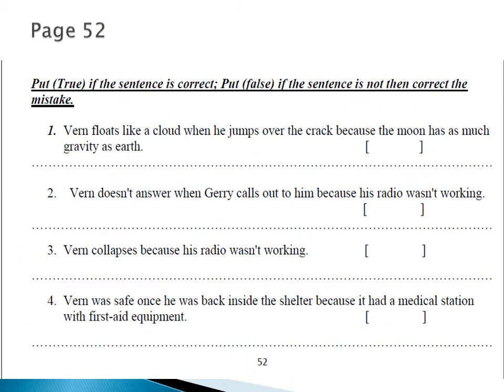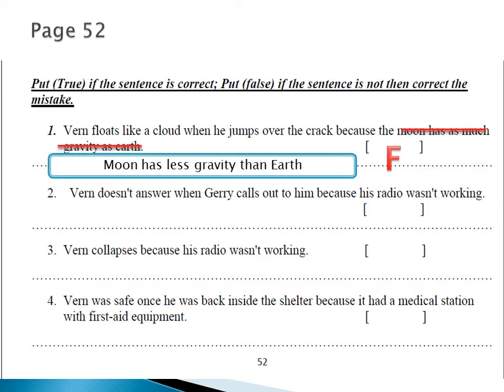Let's go to the True or False section on page 52. Statement: 'Verne floats like a cloud when he jumps over the crack because the moon has as much gravity as Earth.' Is this correct? No, it's false. The moon's gravity is one-fifth of the gravity of the Earth — it's not the same at all. So we're going to cross out that part and write that the moon has less gravity than Earth.